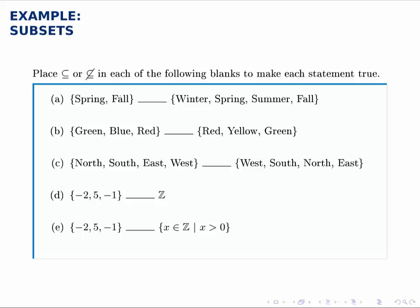So for instance, in part A, spring and fall, both of those elements show up in the set on the right, so the left set is a subset of the right set.